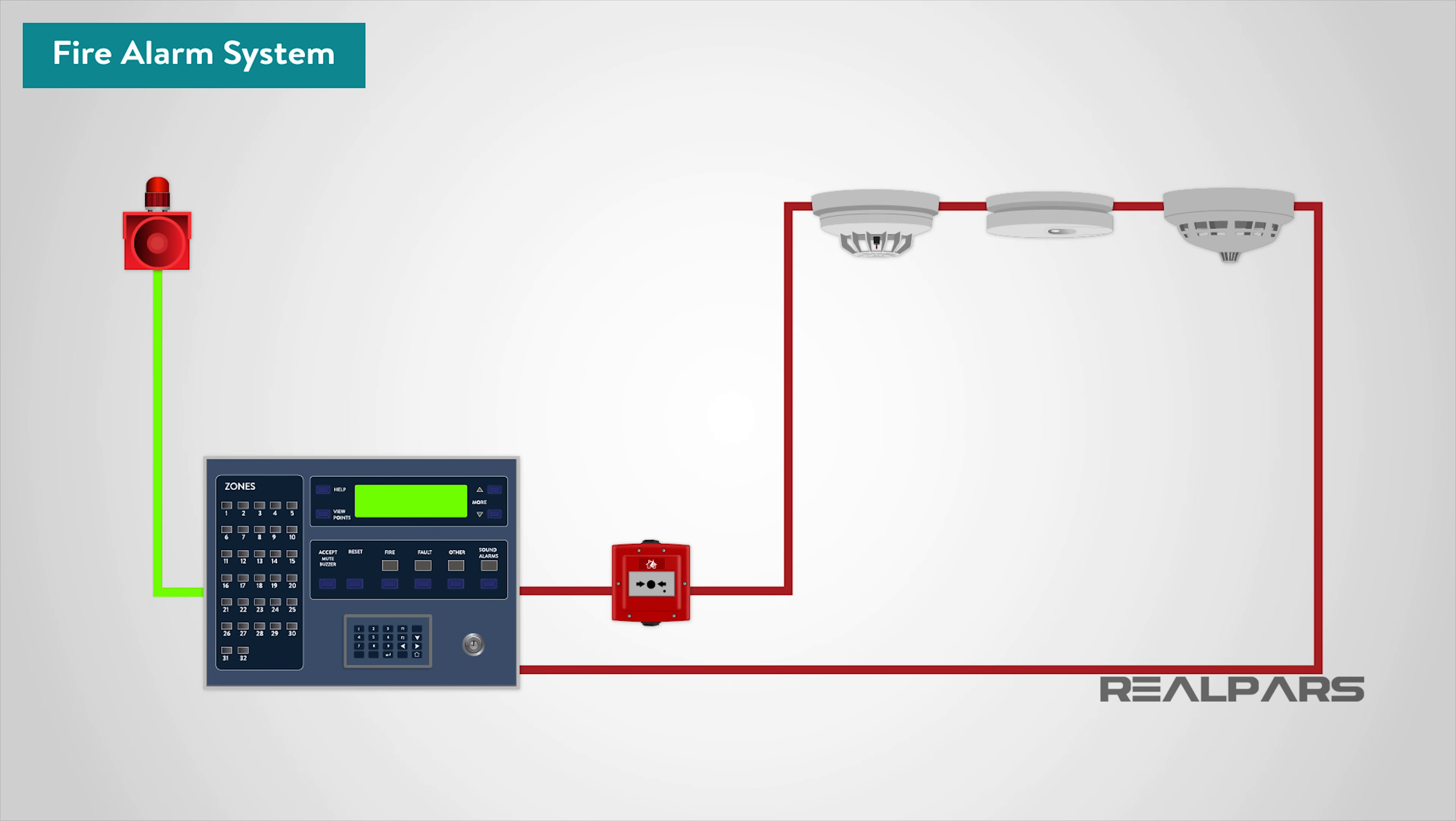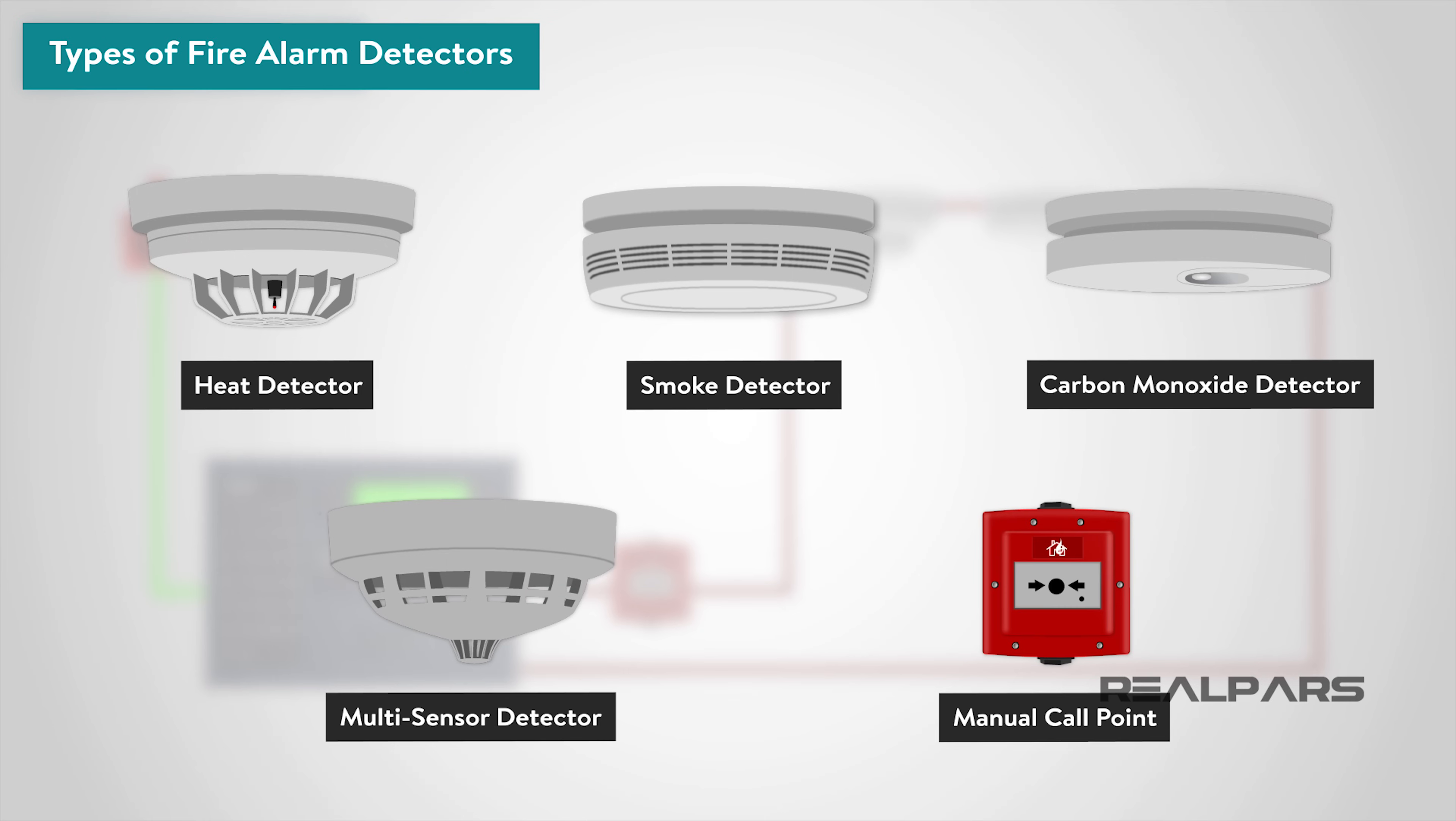At the core of a fire alarm system are the detection devices from sophisticated intelligent smoke detectors to simple manually operated break glass units. There are a wide array of different types, but we can divide them into groups including heat detectors, smoke detectors, carbon monoxide detectors, multi-sensor detectors, and manual call points.